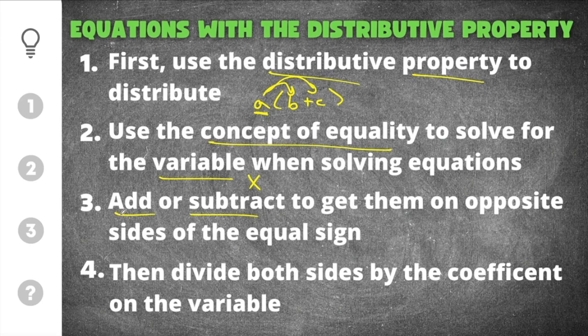When you go to solve the equation, you have to add or subtract to get the variables and constants on opposite sides of the equal sign. After that, you'll divide by the coefficient on the variable.